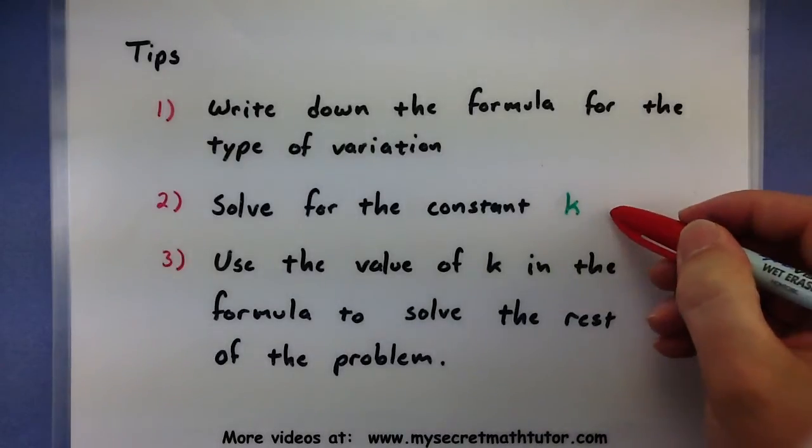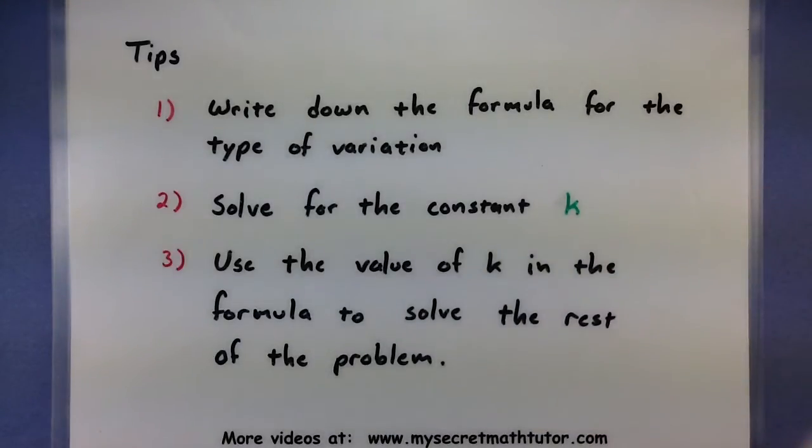Then the next part we'll do is actually solve for the constant k that's a part of our variation formula. We'll use just a little bit of the information from the problem to actually figure out what that k is. Lastly, we'll use the value of k in our original formula and just go ahead and solve the rest of the problem. These three easy steps and you should be done.